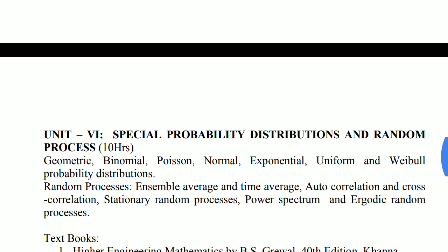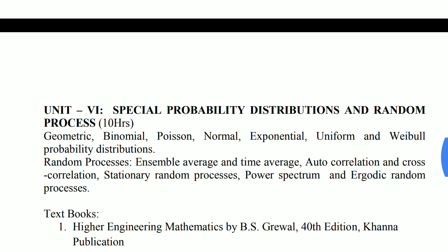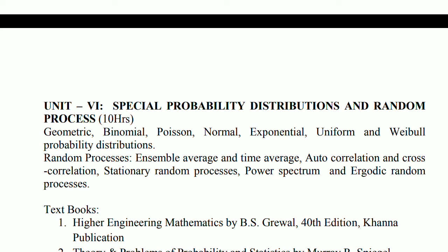The last unit, unit number 6, Special Probability Distributions and Random Process. I will suggest you to do all 7 distributions if possible: geometric, binomial, Poisson, normal, exponential, uniform, and Weibull probability distributions. There is also a random process topic. Generally there is one question of random process and one of probability distributions in the either/or parts, but sometimes the paper setter asks two probability distributions in the either part and one in the or part with random process. It is better to do the special probability distributions as they are easy and you can score marks. For the textbook, I will suggest you to refer to B.S. Grewal for Applied Mathematics 4 — it is very easy to get the questions from that book. Thank you.